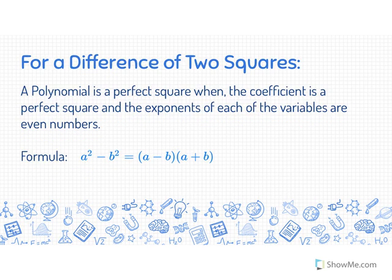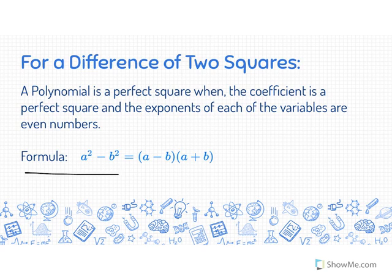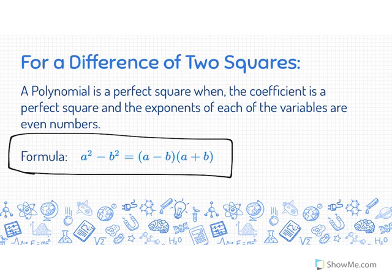Our next term is difference of two squares. A polynomial is a perfect square when the coefficient is a perfect square and the exponents of each of the variables are even numbers. If we had a 4 in front of the variable, that would be a perfect square. We do have two even exponents on a squared minus b squared. This is the general formula: a squared minus b squared equals (a minus b)(a plus b). You can rewrite it either way — (a plus b)(a minus b) — as long as you have both.